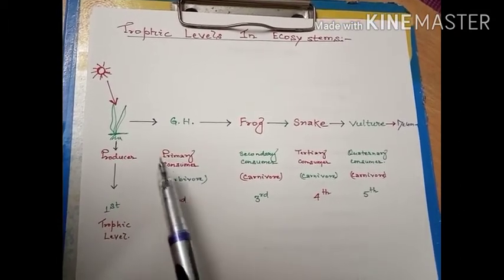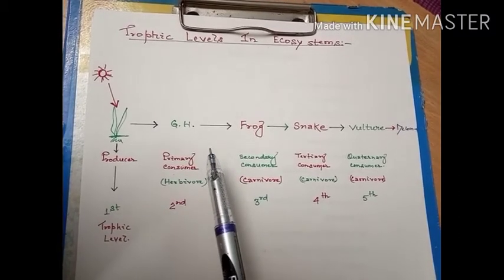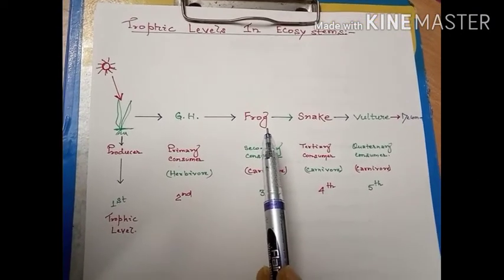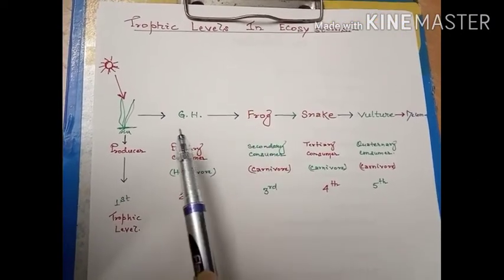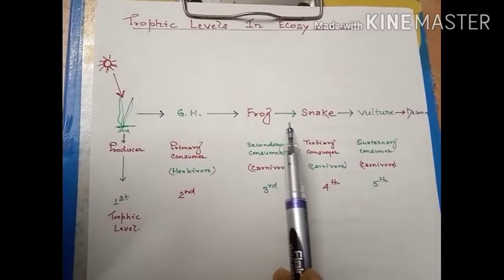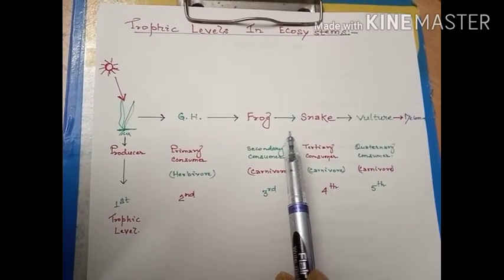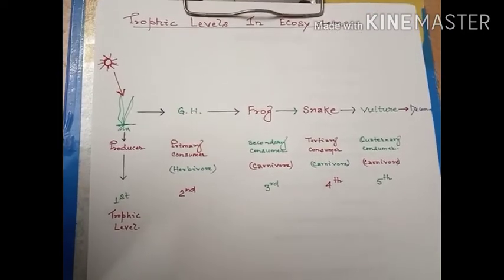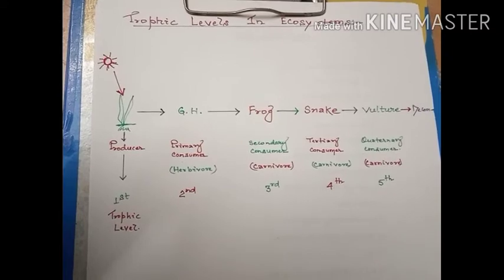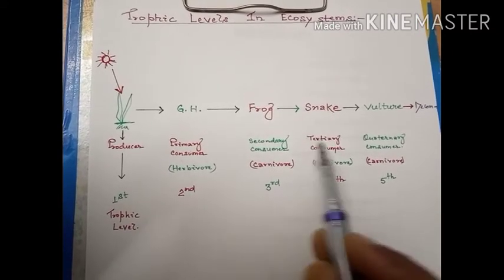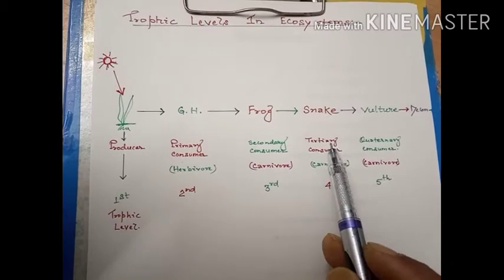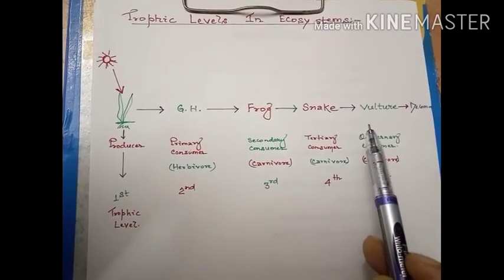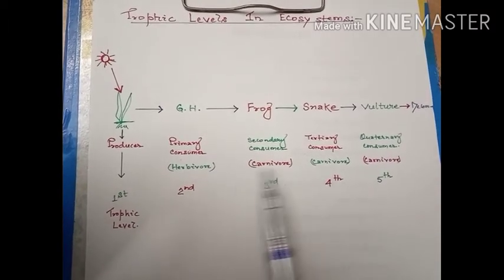The food passes from one organism to another in a stepwise fashion, with a definite arrangement in successive levels in an ecosystem. The successive step or level of food in the arrangement of the producer-consumer relationship in an ecosystem is known as a trophic level.